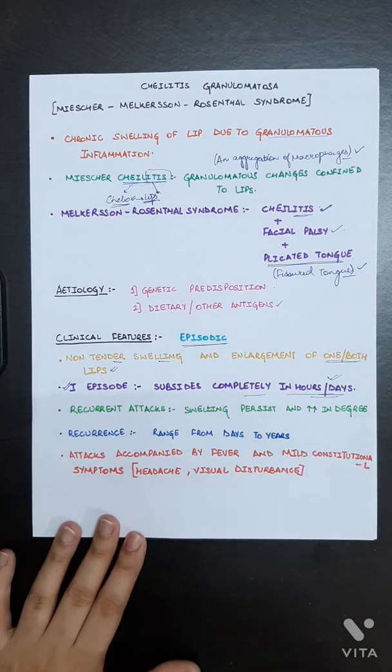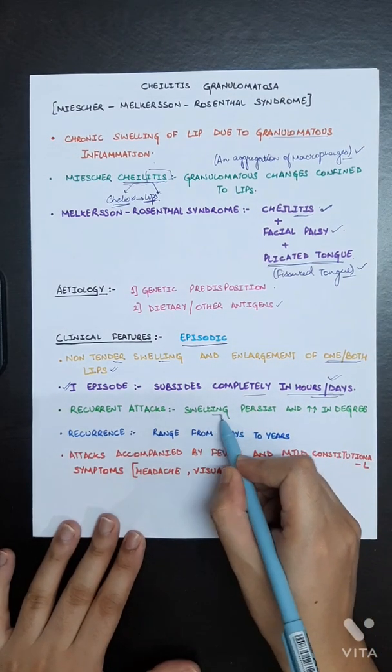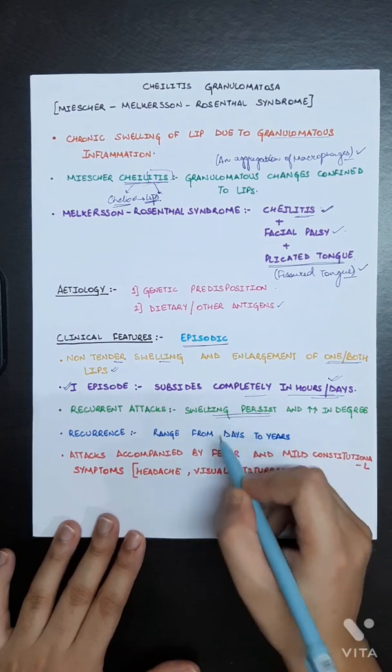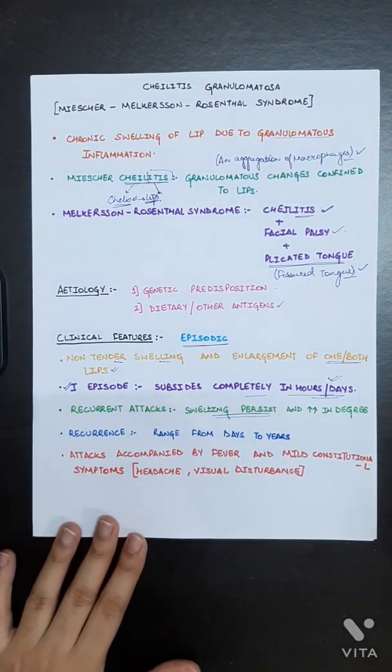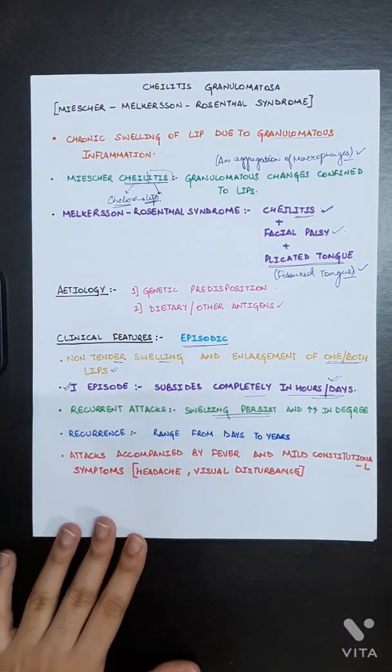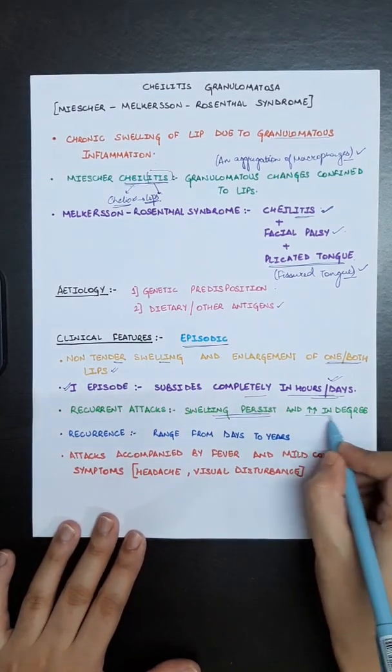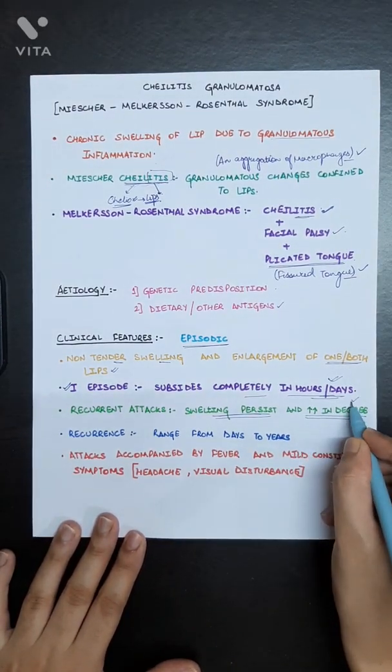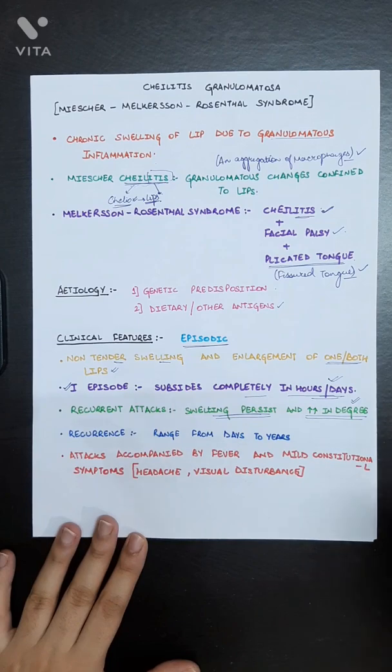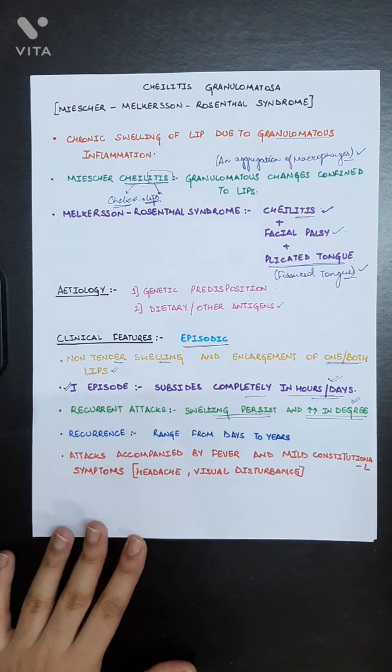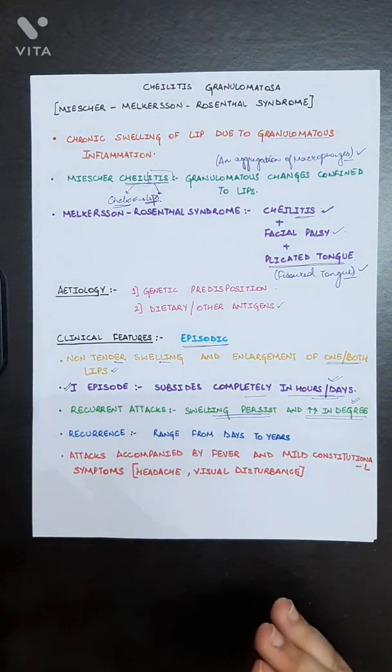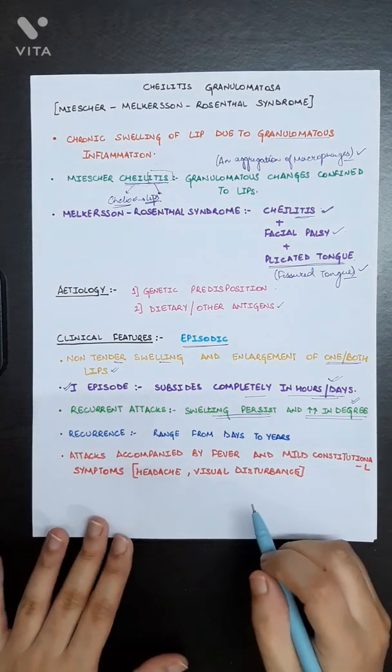As the disease becomes chronic, its severity also increases. In first episode it basically subsides completely in hours or days, but its recurrent attacks cause persistent swelling. So the swelling after that persists - it becomes permanent and there is increase in that degree also. As the disease becomes chronic, it causes increase in its severity.